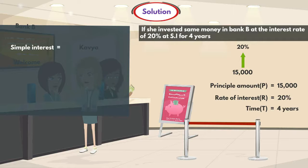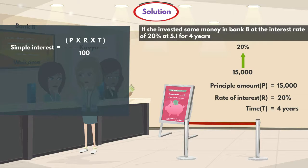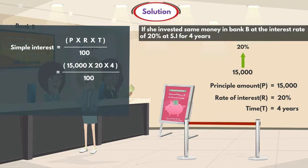We know the simple interest formula: Simple Interest = P into R into T by 100. After substituting the values, we get 15,000 into 20 into 4 by 100. After solving this, we get 12,000.